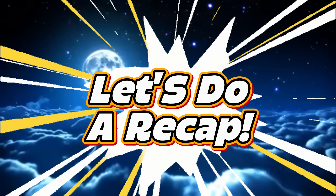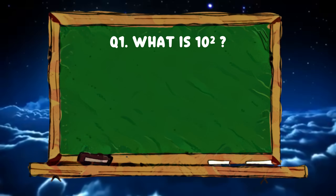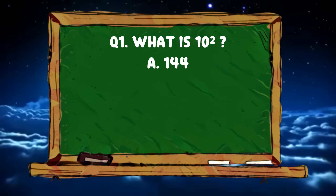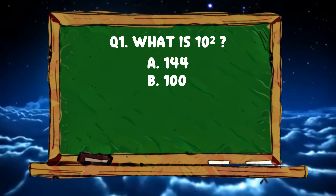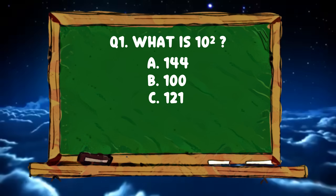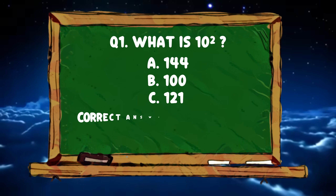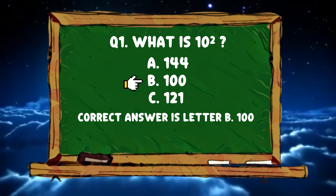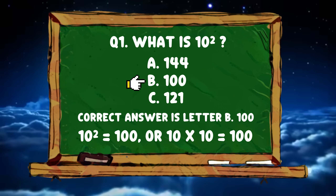Let's do a recap. Question number 1: What is 10 squared? Letter A 144, B 100, or letter C 121? The correct answer is letter B 100. 10 squared is equals to 100.